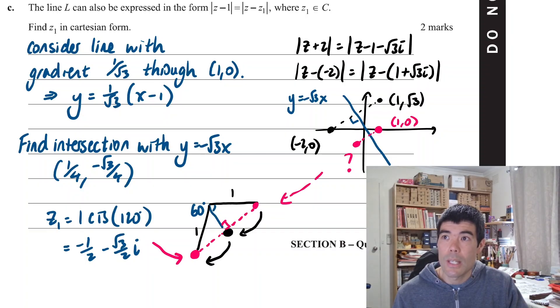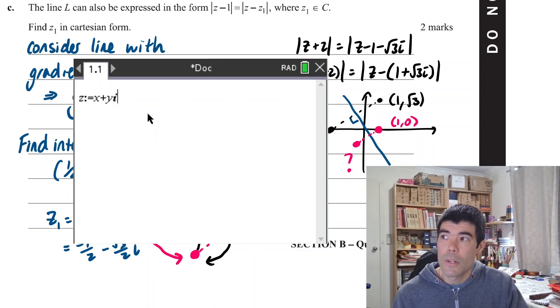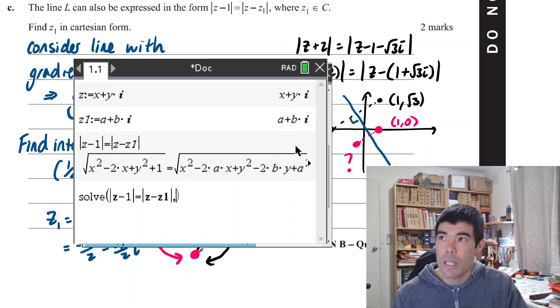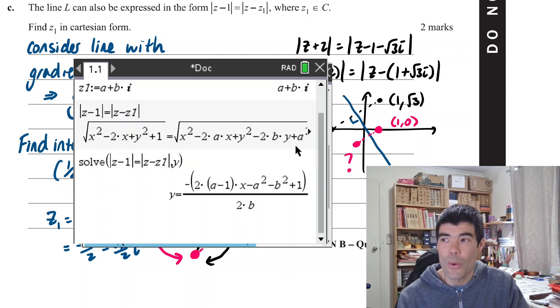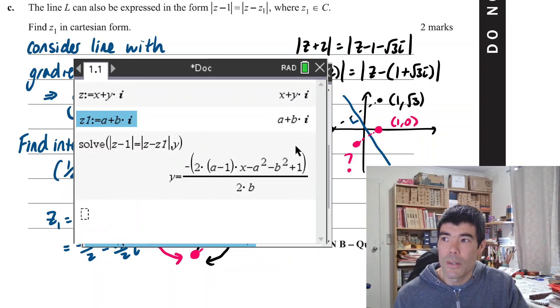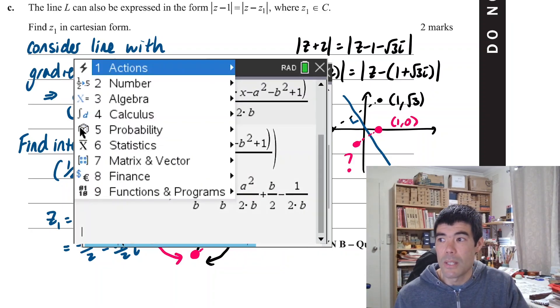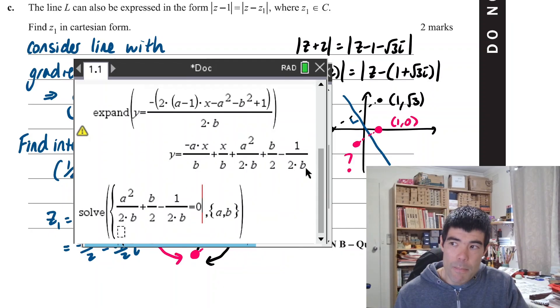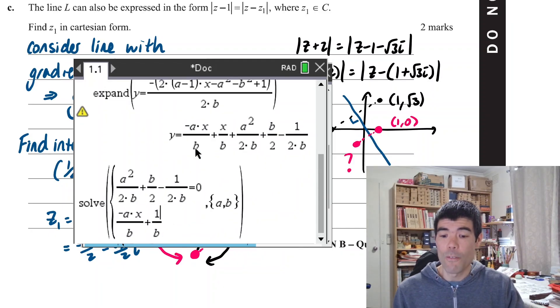Another way we could do it is using algebra or on the CAS calculator. So if we define z as say x + yi and define z1 as a + bi, then we can find an expression for the length of |z - z1| being equal to the length of |z - 1|. We probably want to solve that expression for y and we know that that expression must be equivalent to y = -√3x. So if we expand it out, we know that the gradient must be -√3 and the constant term must be 0. So we can set up now two equations to solve for a and b and we know that this part must be 0 and the coefficient of x must be -√3. If we solve that for a and b on the calculator, we can also get the coordinates of z1.